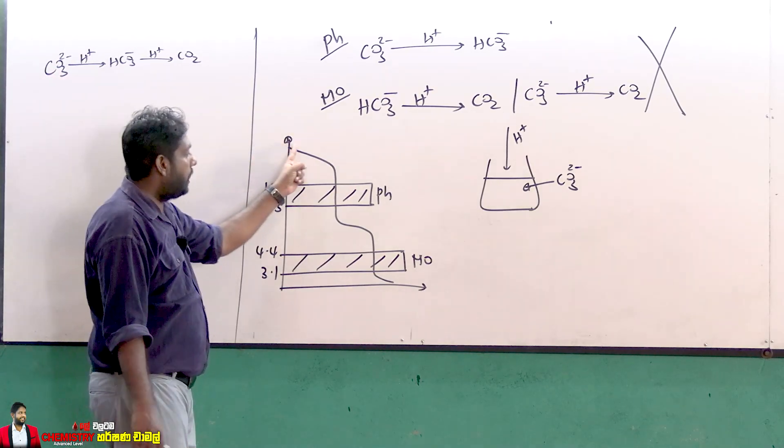You need to check the pH range with methyl range indicator. That's the range below. Another indicator won't work with bicarbonate and carbon dioxide. If you don't have bicarbonate, if you don't have the right pH range, you won't have a reaction. That's it. If you don't have any reaction to this, you don't have any reaction.